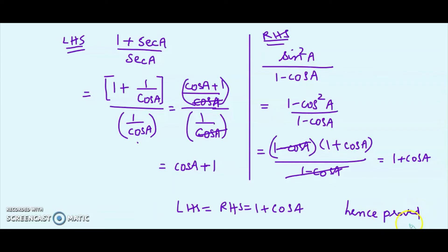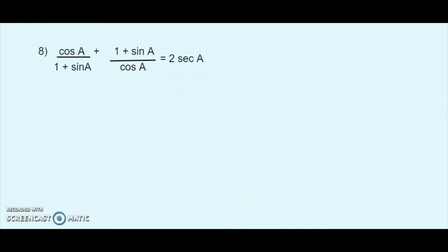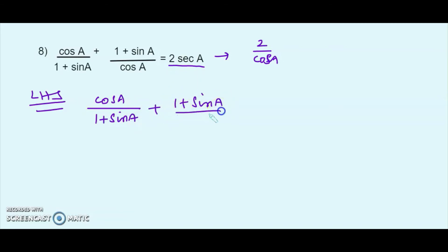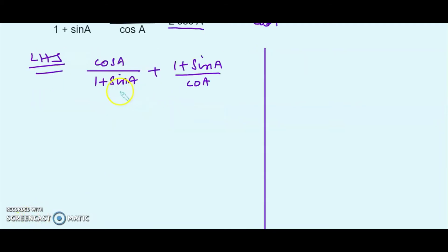Moving from left to right or right to left directly would be very difficult — we'd get stuck — so we say it is proved using the simplified form. Next question: cos A / (1 + sin A) + (1 + sin A) / cos A = 2 sec A. The right hand side is a single simple term; even if I simplify it I'll get 2/cos A. So we have to solve from the left hand side by finding the LCM.